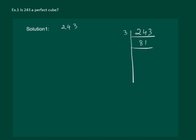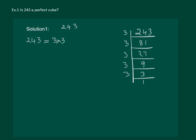Then we start with 3 again. After prime factorization we can write 243 as 3 into 3 into 3 into 3 into 3.